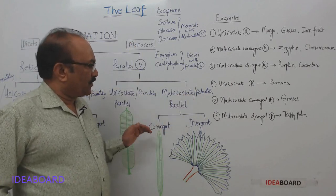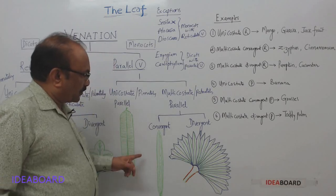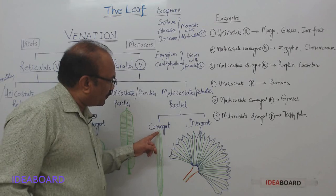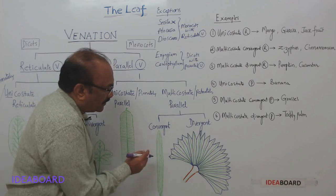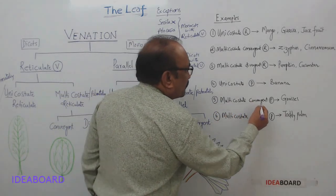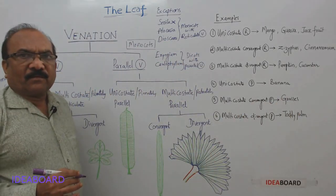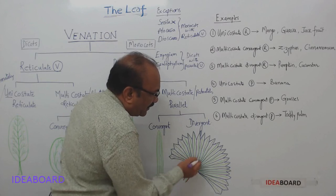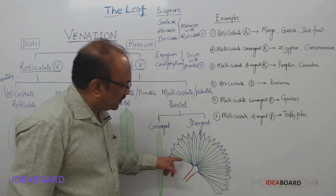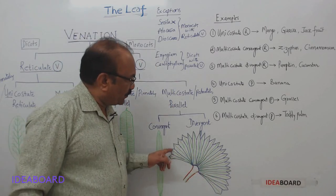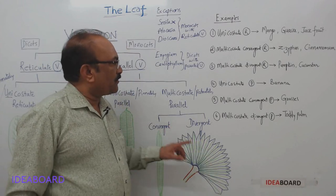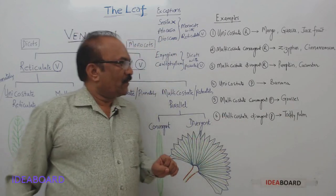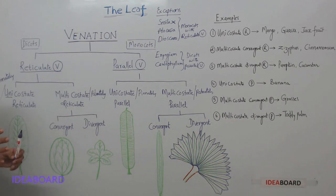In multicostate convergent parallel venation, more than one midrib is present and they all spread into the lamina and fuse at the apex — the example is grasses. In multicostate divergent parallel venation, many midribs enter the lobes of the lamina. The green lines in the diagram represent these midribs. The example is the toddy palm.